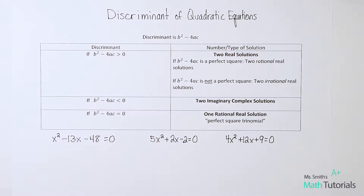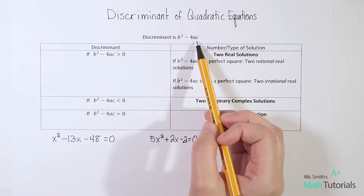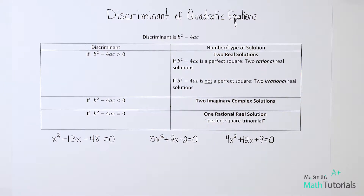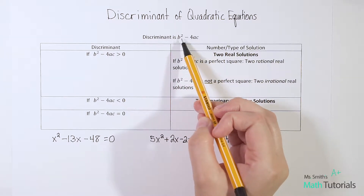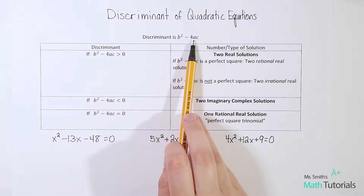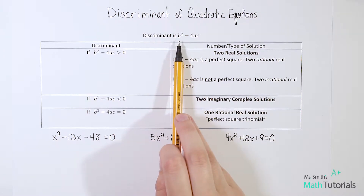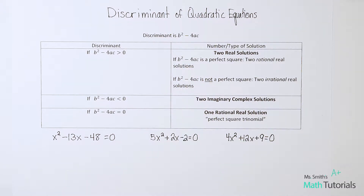The discriminant of a quadratic equation is the part that falls underneath the square root of the quadratic formula. If you need to review the quadratic formula, definitely check out my video specifically on that. We're just pulling out that one part: b squared minus four times a times c. By plugging in our a, b, and c values into this discriminant, we can tell the number of solutions and the type of solution without even having to solve the equation.